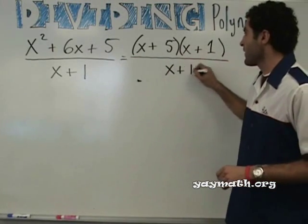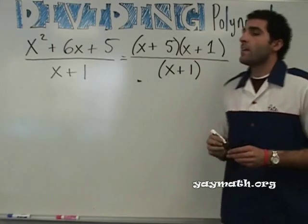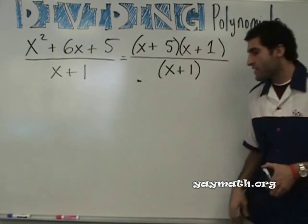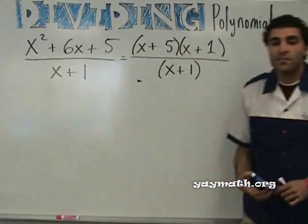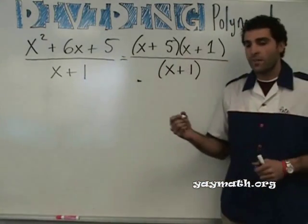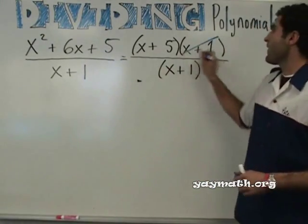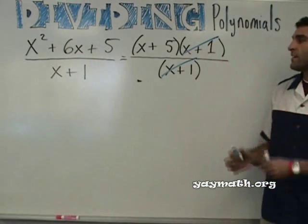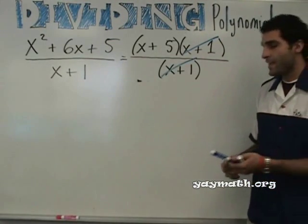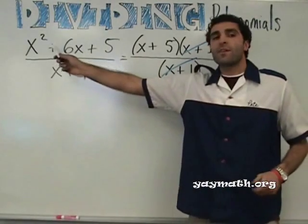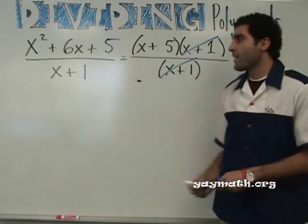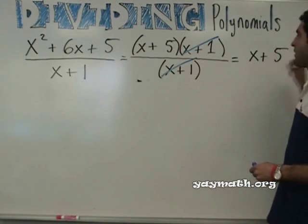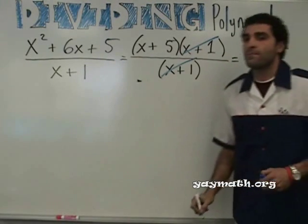And we have X plus one down here. Can you see what happens next? Yeah. What do you do? Cancel. Cancel what and what? X plus one. X plus one divided by X plus one is one factor which cancels. So the answer to X squared plus six X plus five divided by X plus one equals X plus five.